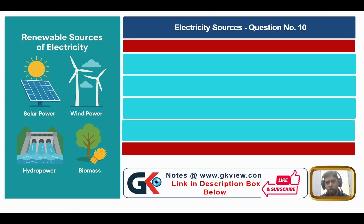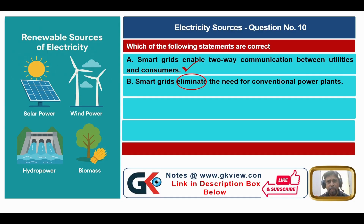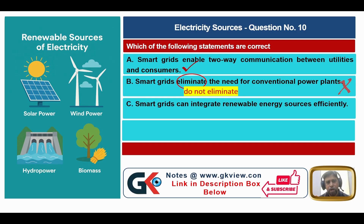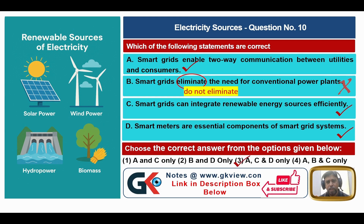Question number ten: which statements are correct? Statement A — smart grids enable two-way communication between utilities and consumers — is true. Statement B — smart grids eliminate the need for conventional power plants — is false; smart grids do not eliminate that need. Statement C — smart grids can integrate renewable energy sources efficiently — is true. Statement D — smart meters are essential components of smart grid systems — is also true. So the answer is option 3: A, C, and D are correct.